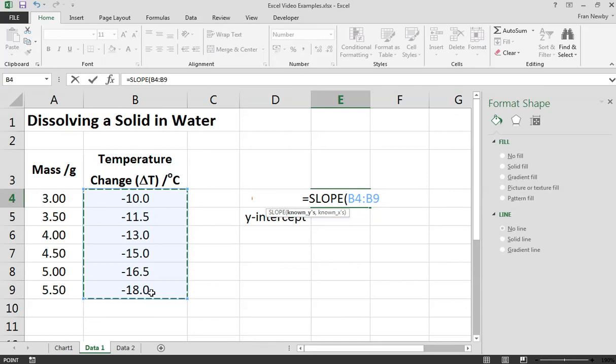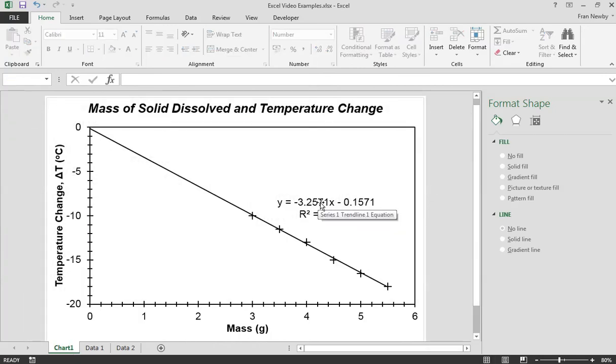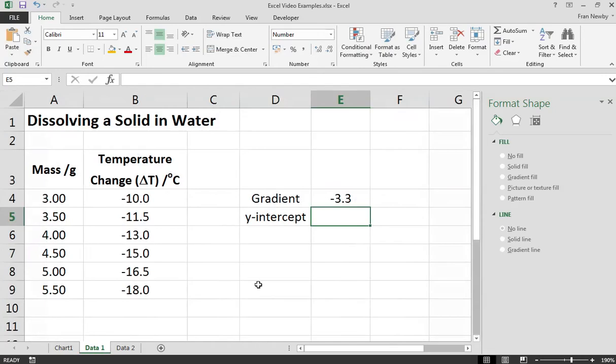That was the temperature change. Comma, known x's, so we just select those and we're going to get - we close the brackets.